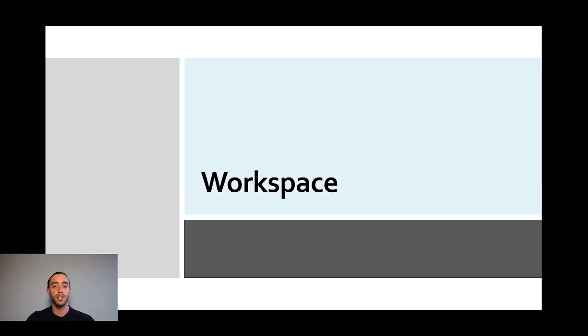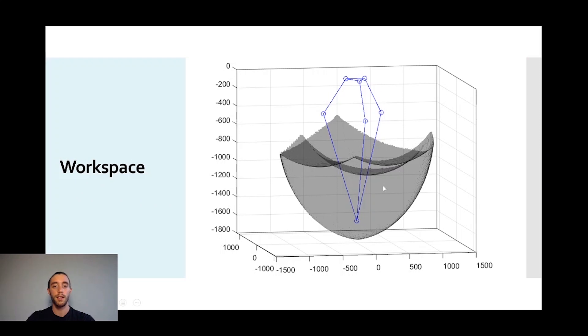The region described by the origin of the end effector frame when all joints execute all possible motions is called the workspace. Here is an example of the workspace for a given dimension of the delta robot. It depends mostly on the dimension of the base platform and on the ratio between the lower and the upper arm.